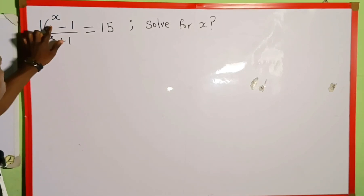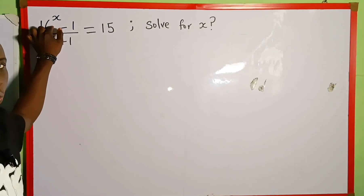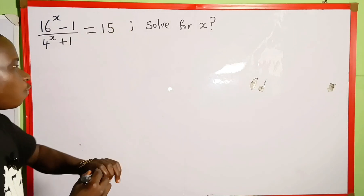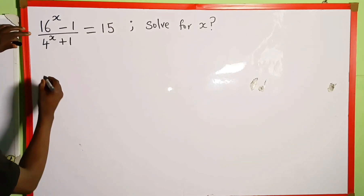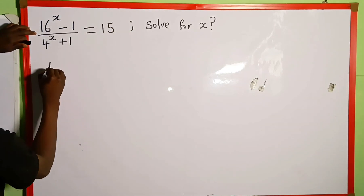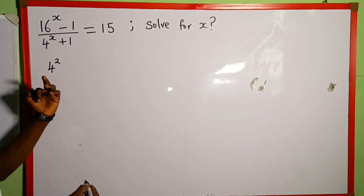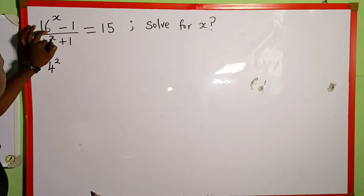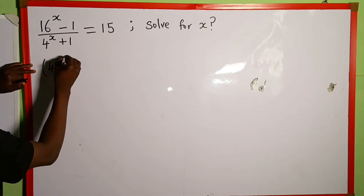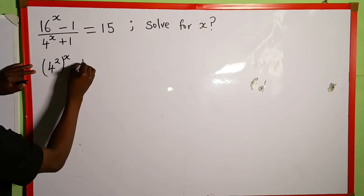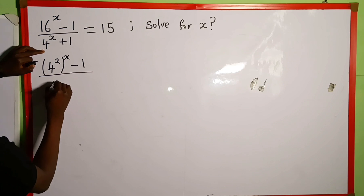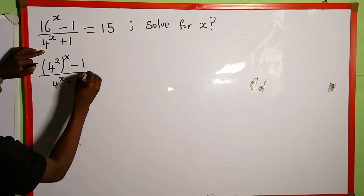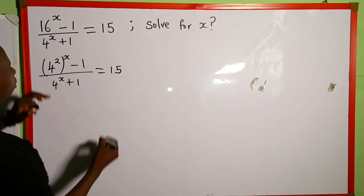The first thing we are going to do is rewrite this 16 in index form to the base of 4. This is going to be 4 raised to the power of 2, because 4 multiplied by 4 gives us 16. Then all raised to the power of x minus 1, over 4 raised to the power of x plus 1, is equal to 15.